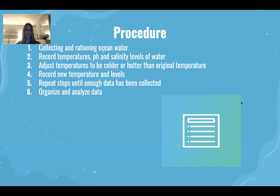The procedure was: first, collecting and rationing ocean water; second, recording the temperatures, pH, and salinity levels of the ocean water; third, adjusting the temperatures to be colder or hotter than the original temperature; fourth, recording the pH and salinity levels; fifth, repeating steps until enough data had been collected; and finally, organizing and analyzing the data.